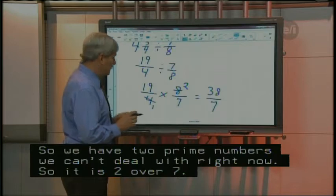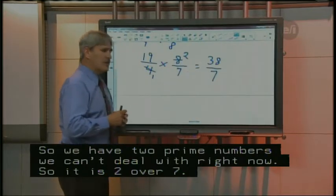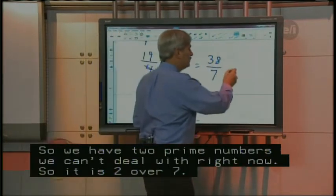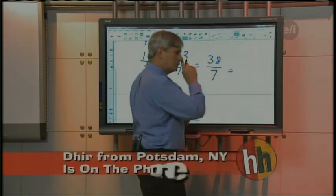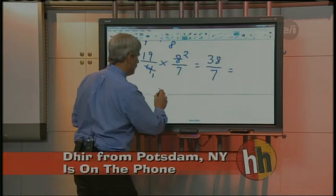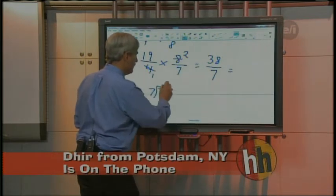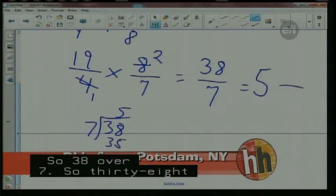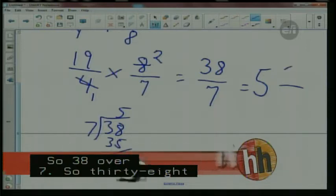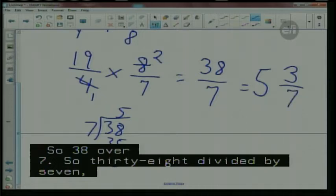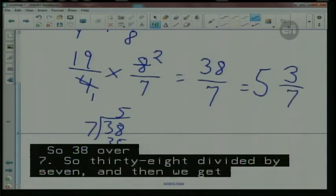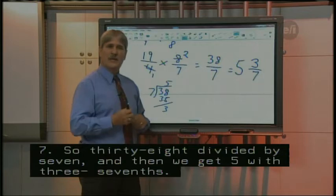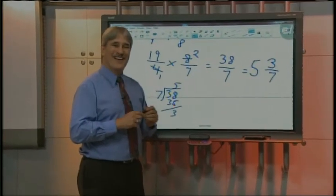Tell me what I need. Seven goes into 38 five times. You got it. Five times. So that's going to be our whole number, right? Alright. How many left over? Three. Three. So that becomes our numerator, right? And we keep the same denominator. And so 38 sevenths is the same as five and three sevenths. Very good. All right, you did a nice job on that. Sorry we missed you in the beginning, but you came back on and you did great. Thanks for calling. Bye now.